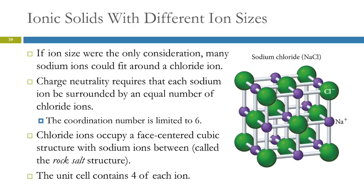If we look at sodium chloride, the sodium ion is significantly smaller than the chloride ion. And if ion size was the only consideration, we could squeeze a whole bunch of sodium ions around the chloride ions — we could get a lot more of these spheres packed into a small volume. But we have to consider charge neutrality: there have to be an equal number of sodium ions and chloride ions, and they have to be spaced out relative to each other. We can't have sodium ions touching each other because they have positive charges and repel each other. So we have to alternate sodium and chloride ions, which limits the coordination number here to six.